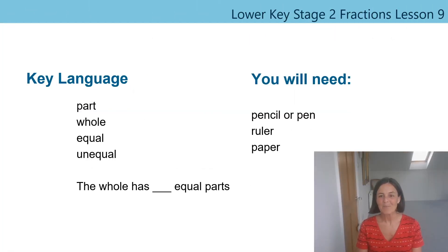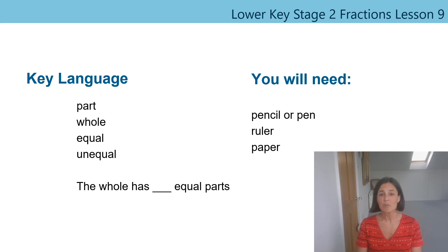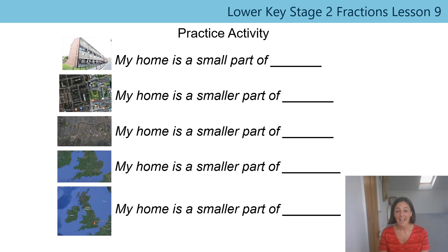Hi, it's Mrs. Barker again. In this lesson we're going to be using the language: part, whole, equal, and unequal. You're also going to be using a sentence to describe how many equal parts the whole has. In the last lesson I did remind you that you were going to need a pencil or pen, a ruler, and a piece of paper for this lesson. If you haven't got those things already, perhaps you'd like to pause the video now, go away and get yourself ready for learning, and then start the video again when you are. Thank you.